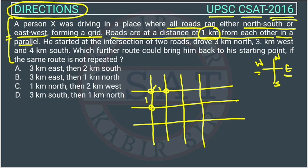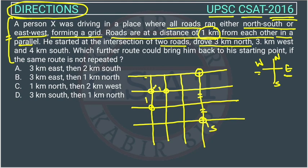He started at the intersection of two roads and drove three kilometers north. Suppose he started from this point — this is the starting point. He is driving three kilometers north: one, two, and we draw one more line here. So he is reaching this point up here in the north direction. That's why we are moving in this direction.